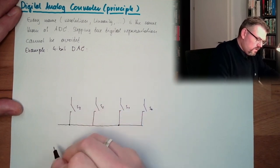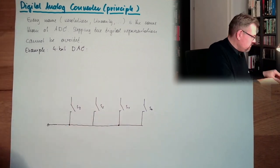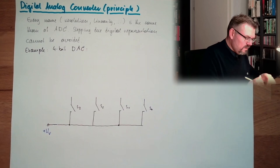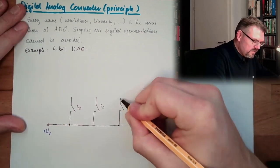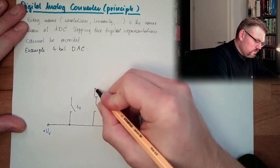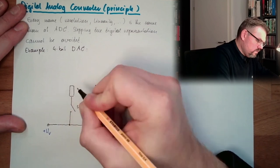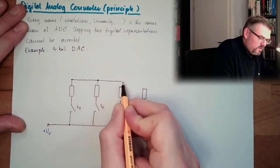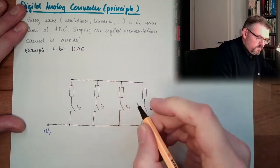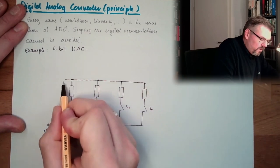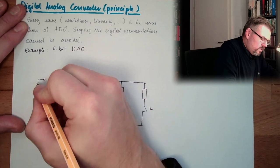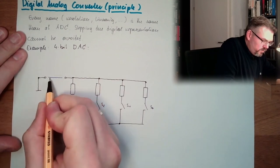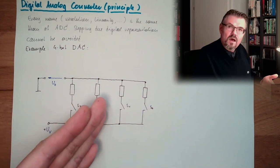And they can be connected to a voltage supply voltage, plus UV. This is the supply voltage. And every switch has its own resistor. And then all are connected to each other. And here we have the output voltage. Here on the other side we're going to ground. Here we have the output voltage Ua or Uo.